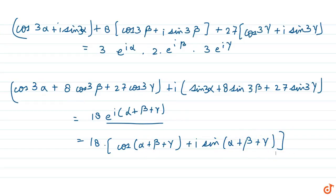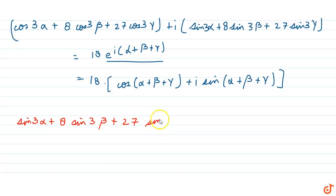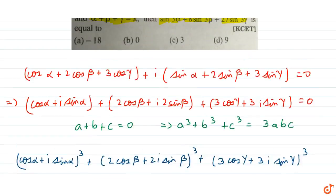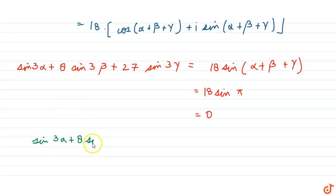Comparing the imaginary terms from the left-hand side and right-hand side, we get sin 3 alpha plus 8 sin 3 beta plus 27 sin 3 gamma equals 18 sin of alpha plus beta plus gamma. Since alpha plus beta plus gamma is given to be pi, this quantity equals 18 sin pi, and we know that sin pi equals 0. So this equals 0. Therefore, sin 3 alpha plus 8 sin 3 beta plus 27 sin 3 gamma equals 0.